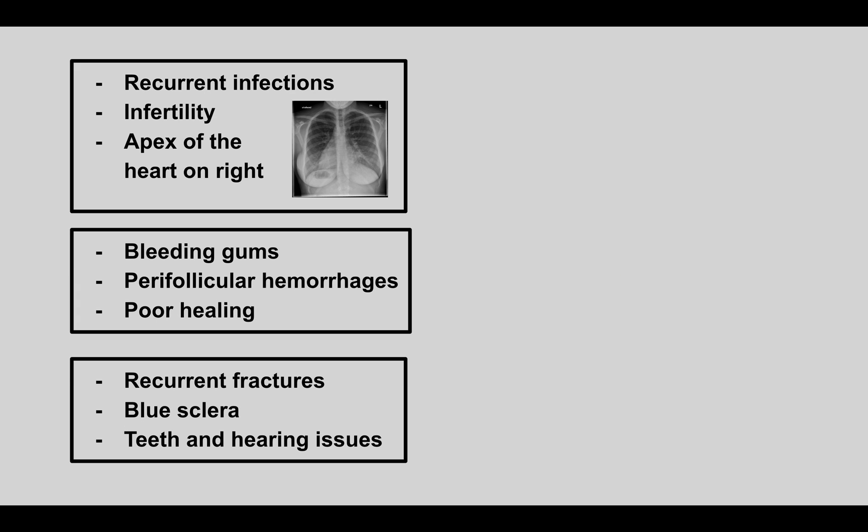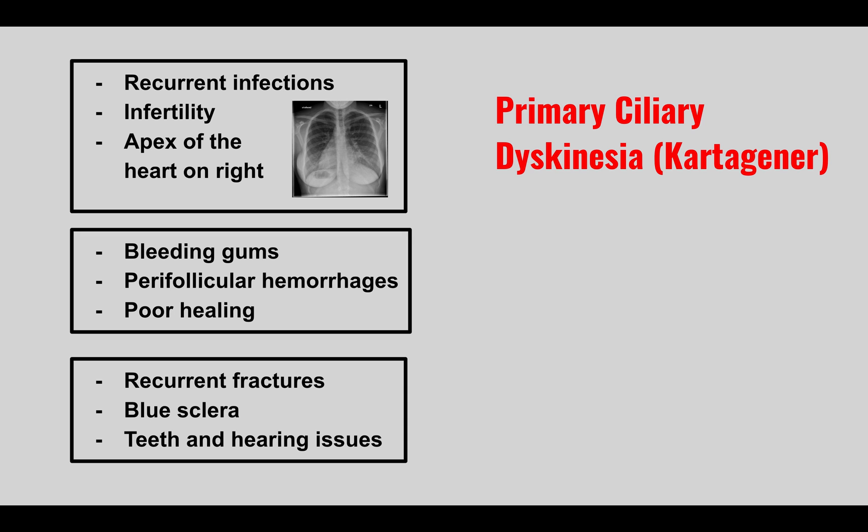The next condition: a patient will have recurrent infections, infertility, and the apex of the heart on the right side. This is primary ciliary dyskinesia, also known as Kartagener syndrome.